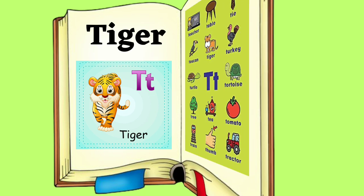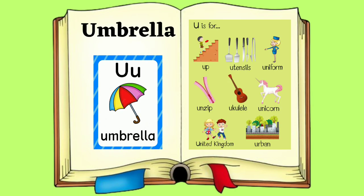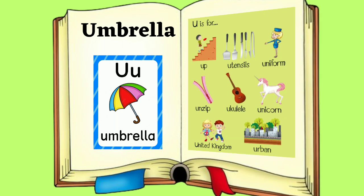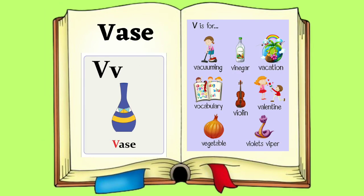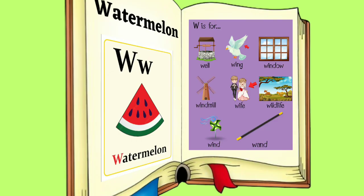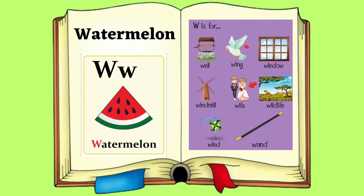Tiger. U for Umbrella. Umbrella. V for Vase. V, V. Vase.